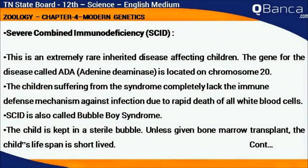Severe combined immunodeficiency (SCID) is an extremely rare inherited disease affecting children. The gene for the enzyme ADA (adenine deaminase) is located on chromosome 20. Children suffering from this syndrome completely lack the immune defense mechanism against infection due to rapid death of all white blood cells.